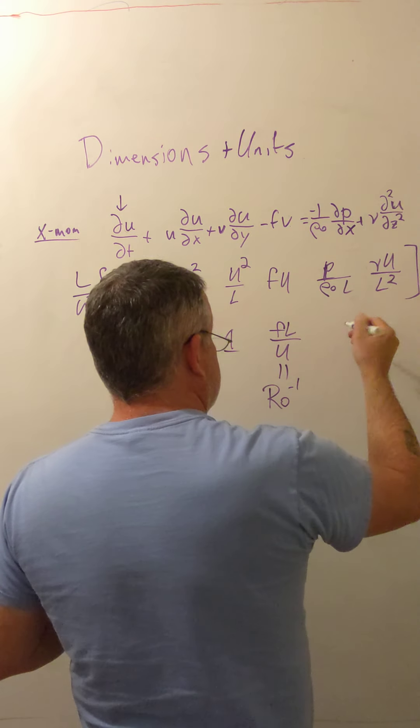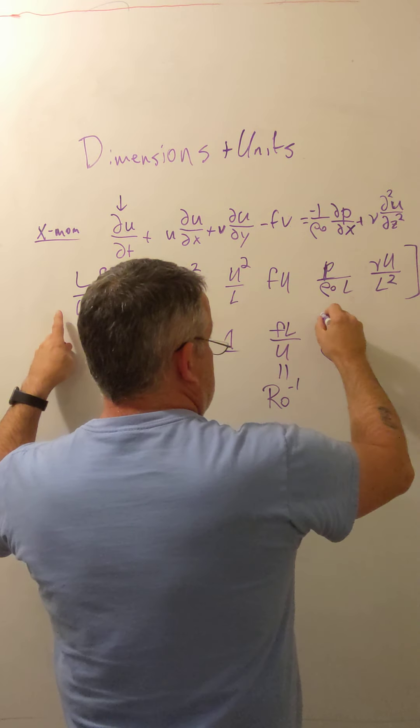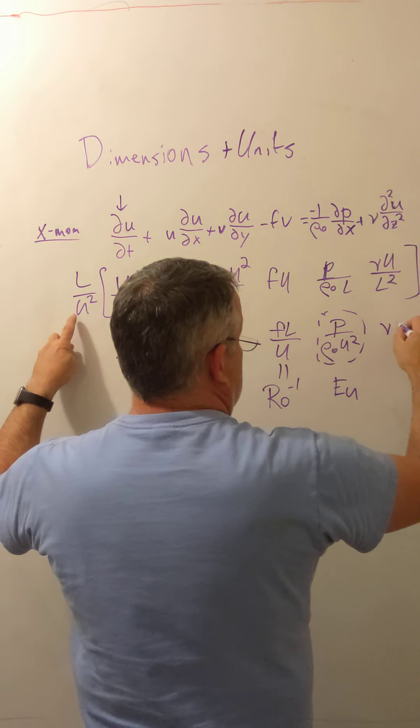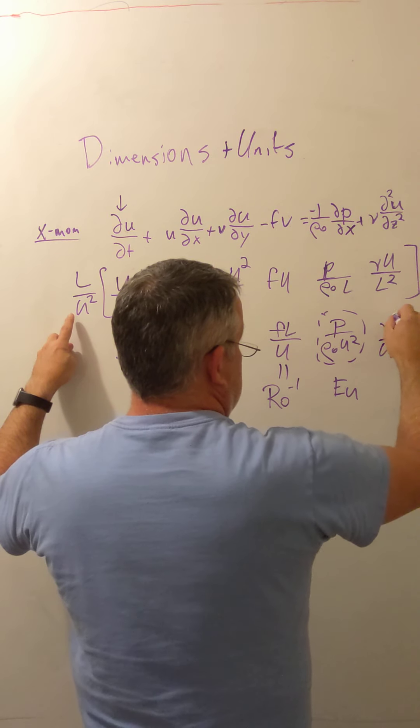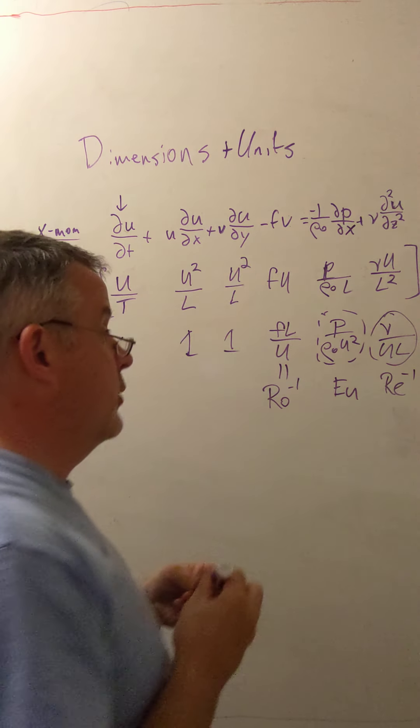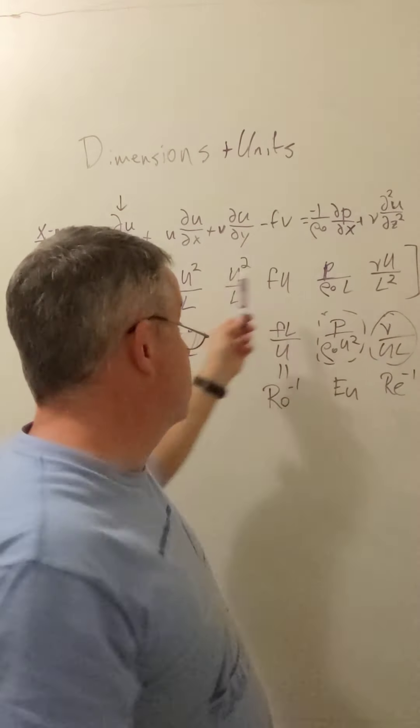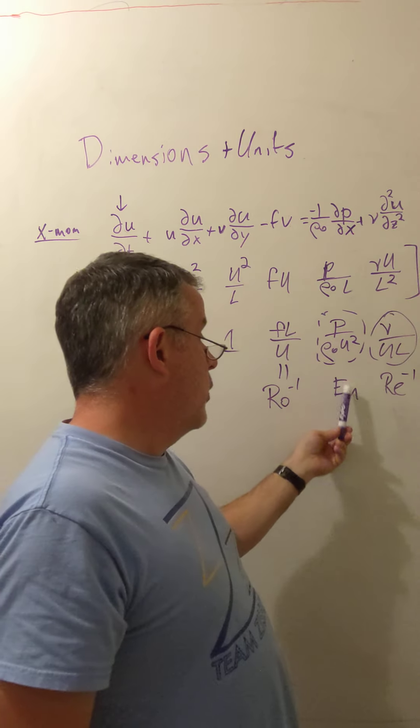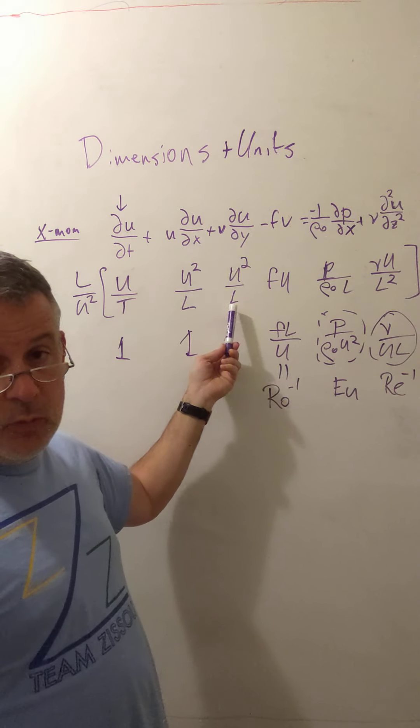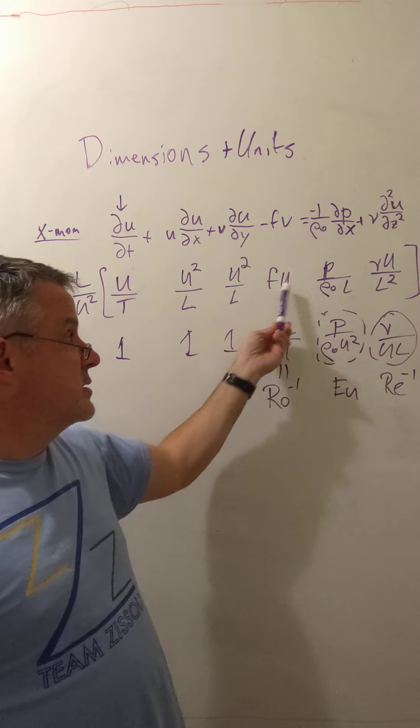Similarly, for this term, you get something that goes like p over rho naught u squared. This one is called the Euler number, and for this one, we get nu over u l. This one is called the Reynolds number, or actually it's the inverse of the Reynolds number for that one. So for a large Reynolds number flow, the viscous term is very, very small compared to the other terms in the equation, you might even neglect it. For an Euler number term that was order one, you might say that this term could possibly interact with these other order one terms. Or if the Euler number is the same size as, say, the inverse Rossby number, you can imagine a balance between this term and this term.